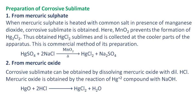Preparation of corrosive sublimate from mercuric sulfate: When mercuric sulfate is heated with common salt in presence of manganese dioxide, corrosive sublimate is obtained. Manganese dioxide prevents the formation of calomel. The corrosive sublimate obtained sublimes and is collected at the cooler parts of the apparatus. This is the commercial method of its preparation.